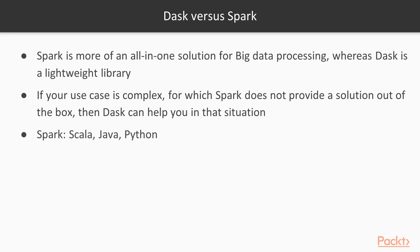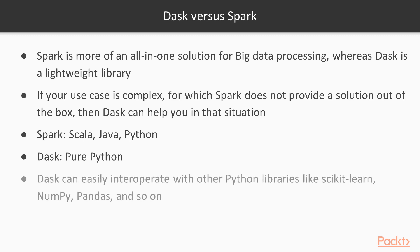Spark is written in Scala and Java and is more suited for those languages, whereas Dask is more suited for pure Python. Dask can easily interoperate with other Python libraries like scikit-learn, NumPy, and Pandas. In fact, these libraries were kept in mind when Dask was being developed — the idea was that since these libraries don't scale well, Dask was meant to be a bridge between distributed computing and these libraries.